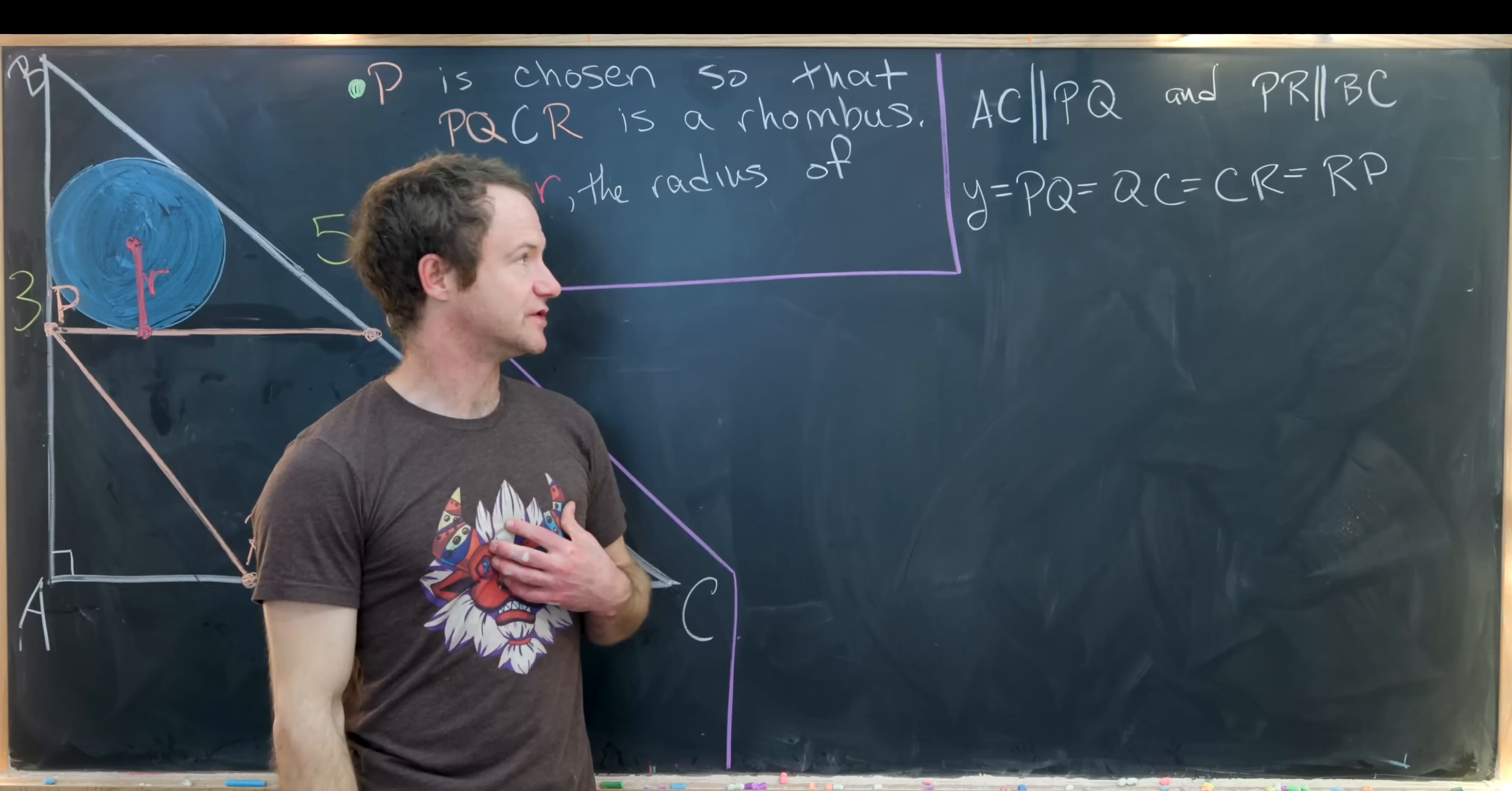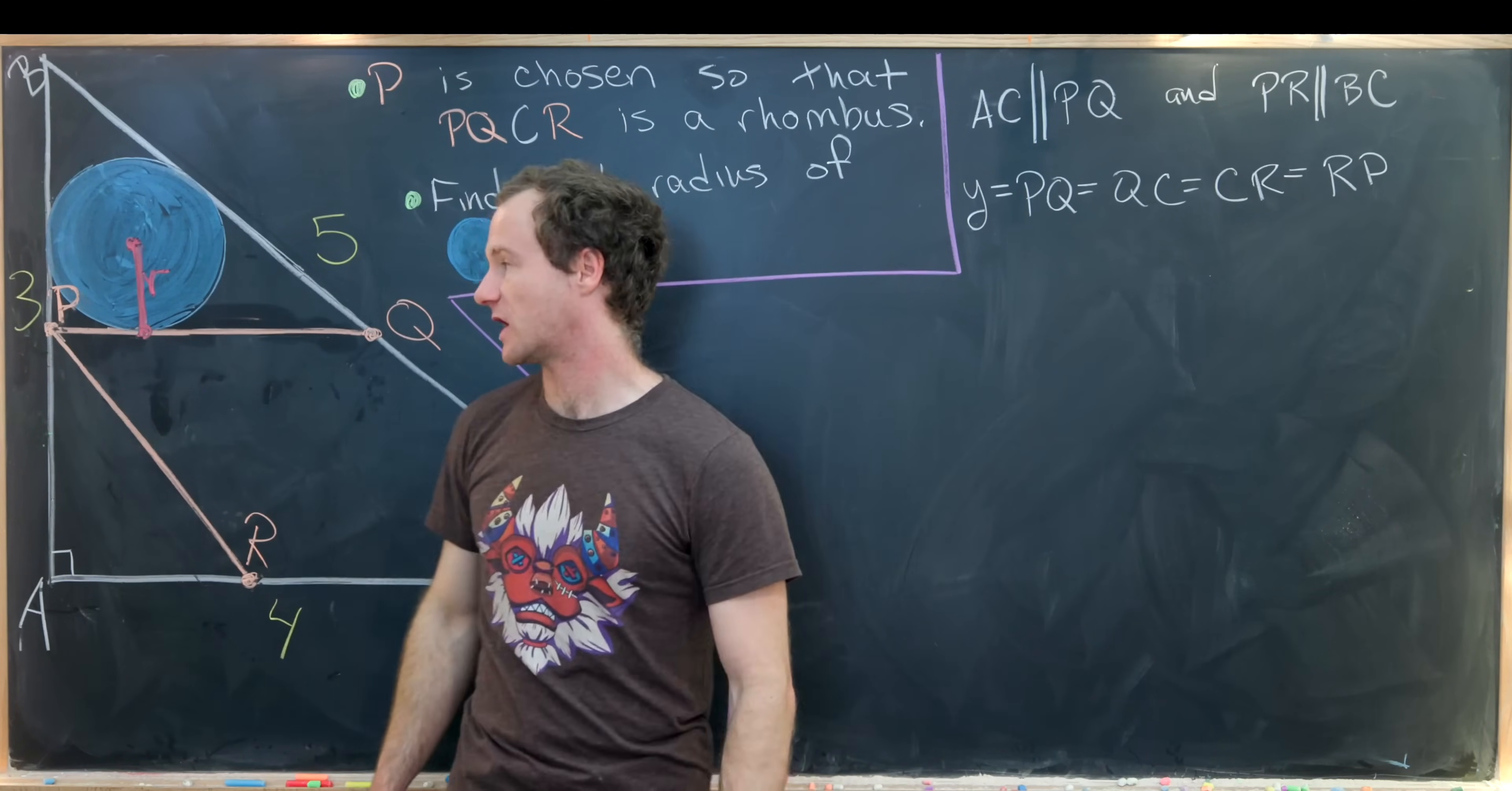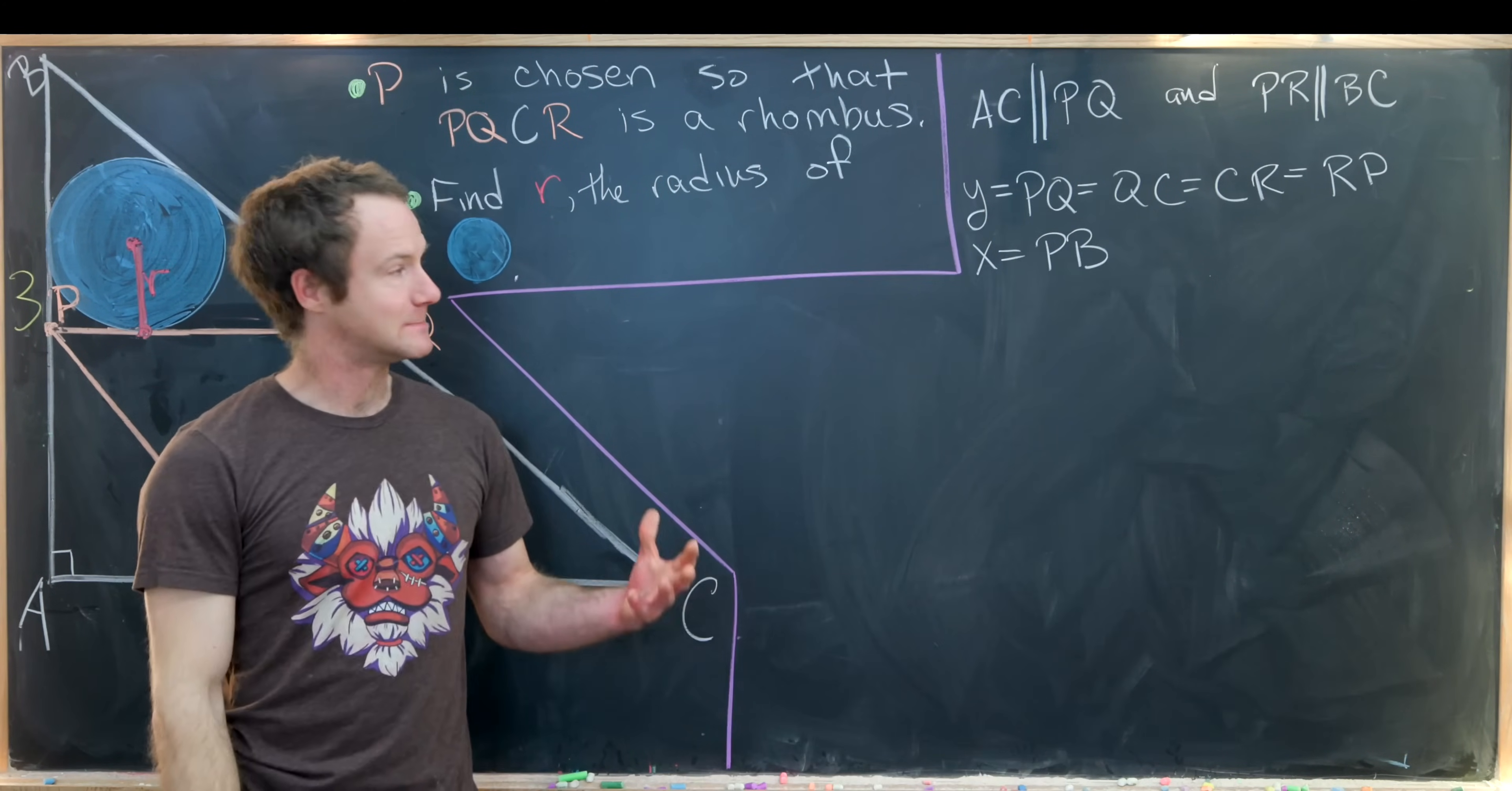Next, we'll introduce another side length, the altitude of this upper triangle, PB. So let's set X equal to PB.